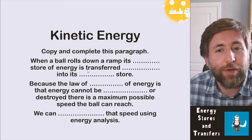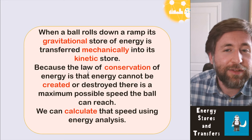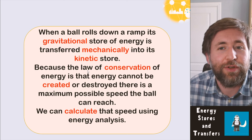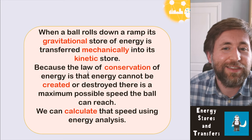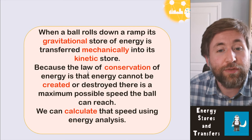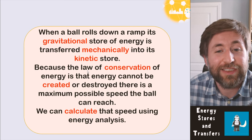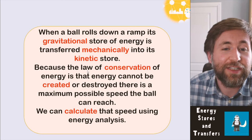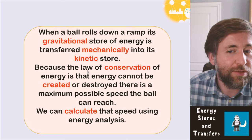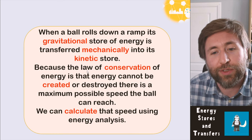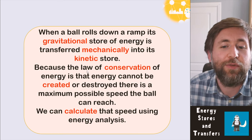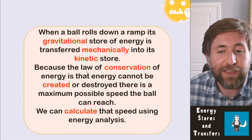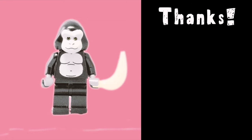When a ball rolls down a ramp, its gravitational store of energy is transferred mechanically into its kinetic store. Because of the law of conservation of energy — energy cannot be created or destroyed — there is a maximum possible speed the ball can reach. We can calculate that speed using energy analysis.